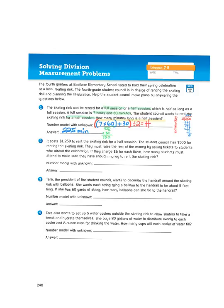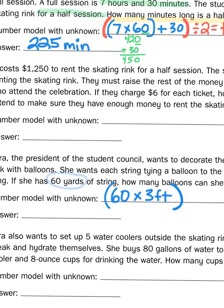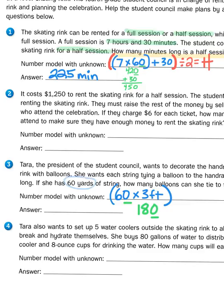Here's my number model. I need to figure out how many groups of 5 feet I can get out of 60 yards. So I'm going to start with my 60 yards. What I need to do is multiply 60 yards times 3 feet per yard. Well, 6 times 3 is 18, so 60, or 6 tens, times 3 is going to give me 18 tens, otherwise known as 180. So now I know how many feet of string I have — I have 180 feet. 60 yards times 3 is 180.